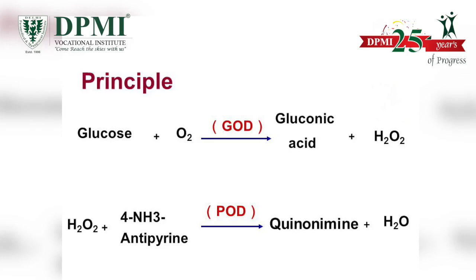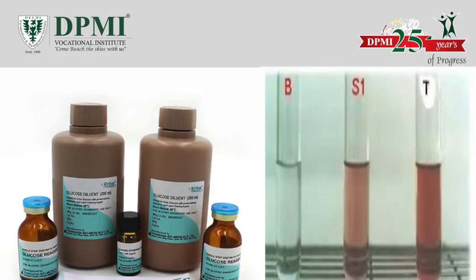The principle of the method is that glucose in the sample is oxidized to yield gluconic acid and hydrogen peroxide in the presence of glucose oxidase. The enzyme peroxidase then catalyzes the oxidative coupling of 4-aminoantipyrine with phenol to yield a colored quinoneimine complex, with absorbance proportional to the concentration of glucose in the sample.